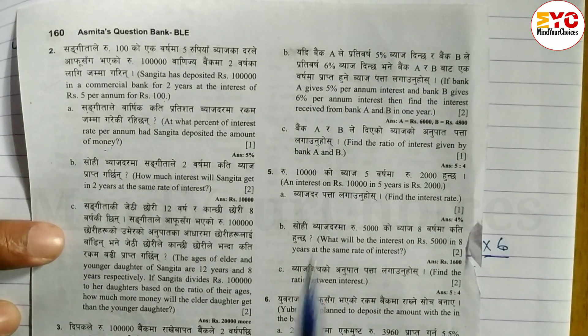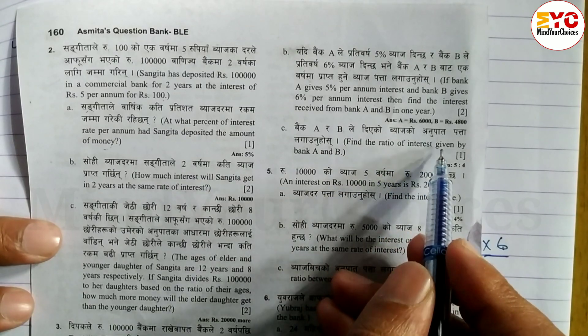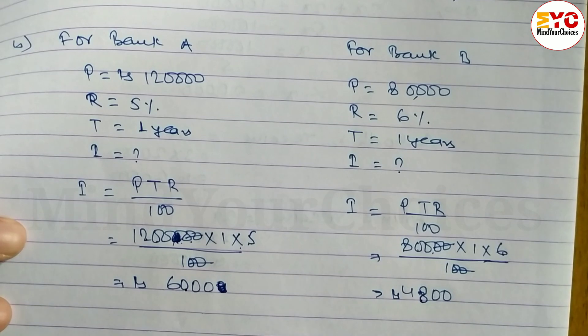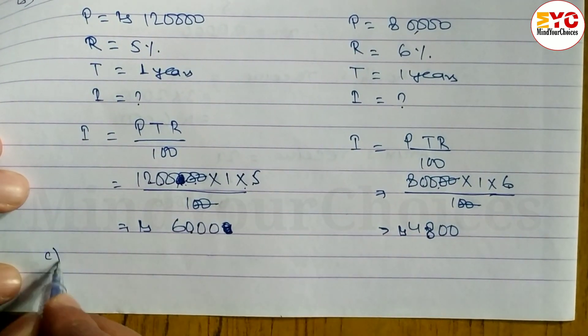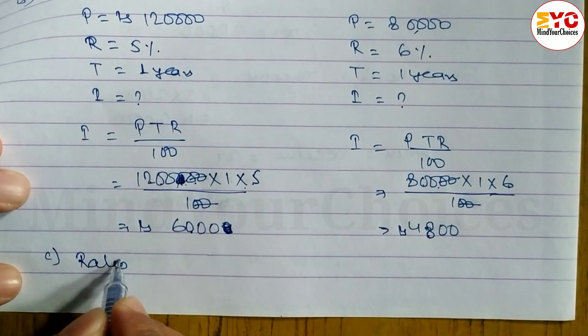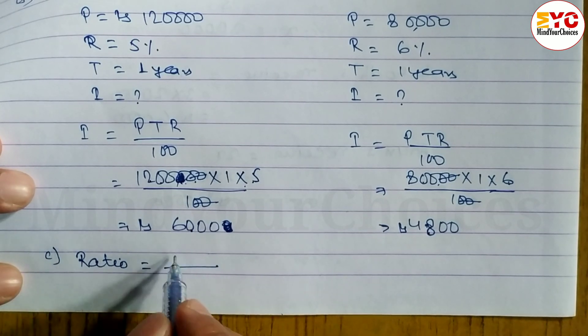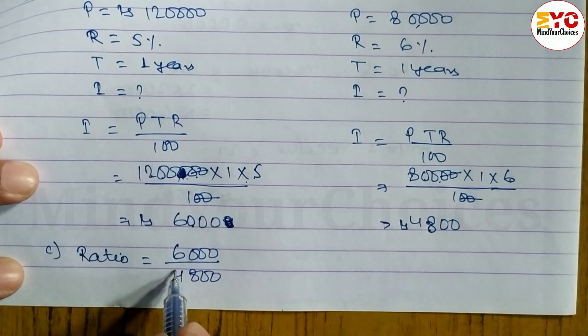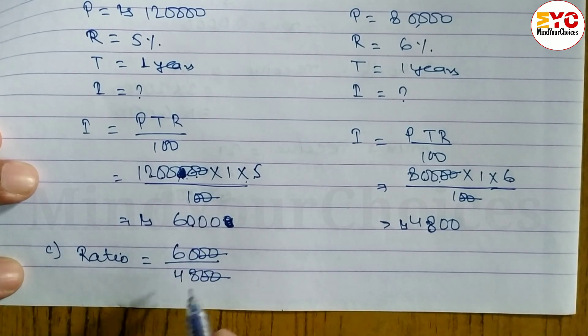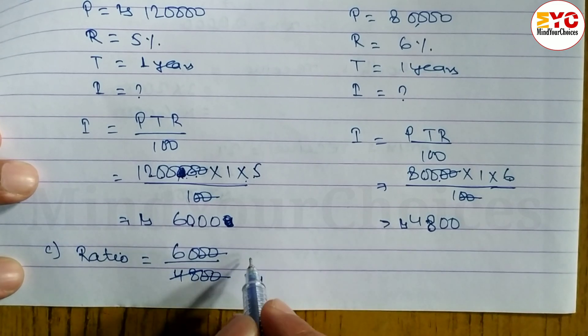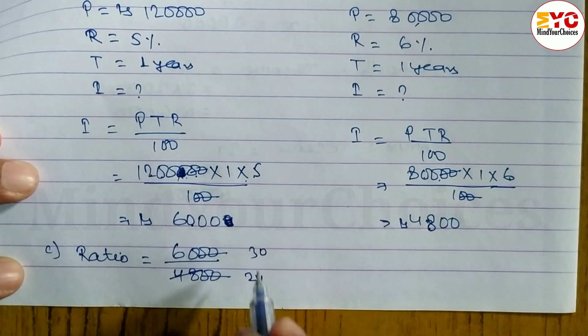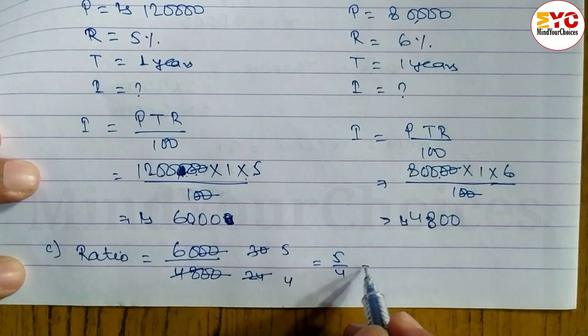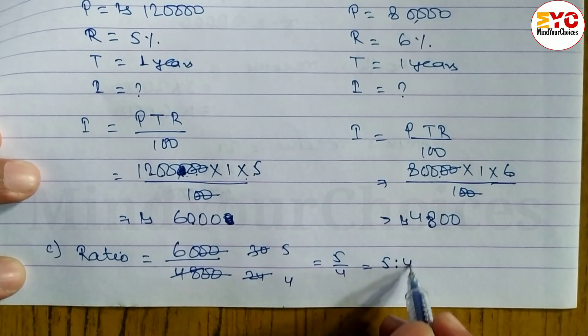Now look at question part C. Question part C asks: Find the ratio of interest given by bank A and B. So ratio equals interest given by bank A is 6,000, bank B is 4,800. Let's calculate: 20, 20 cancel. It means 5 by 4 equals 5 is to 4, which is your answer.